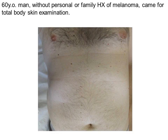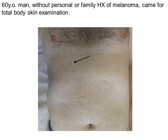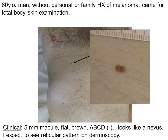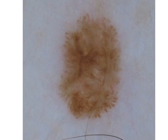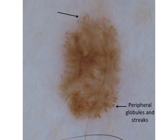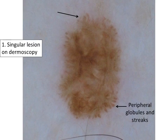Let's review another case. Here's a 60-year-old patient without prior history of melanoma. There's no obvious ugly duckling on the patient's body. I looked dermoscopically at multiple lesions. Let's look at this lesion. Clinically it's a 5 mm macule, flat, brown, ABCD negative — it looks like a nevus. I expect to see a reticular pattern on dermoscopy. However, the lesion showed peripheral globules and streaks on dermoscopy. It was a singular lesion; none of the patient's other nevi looked like this.